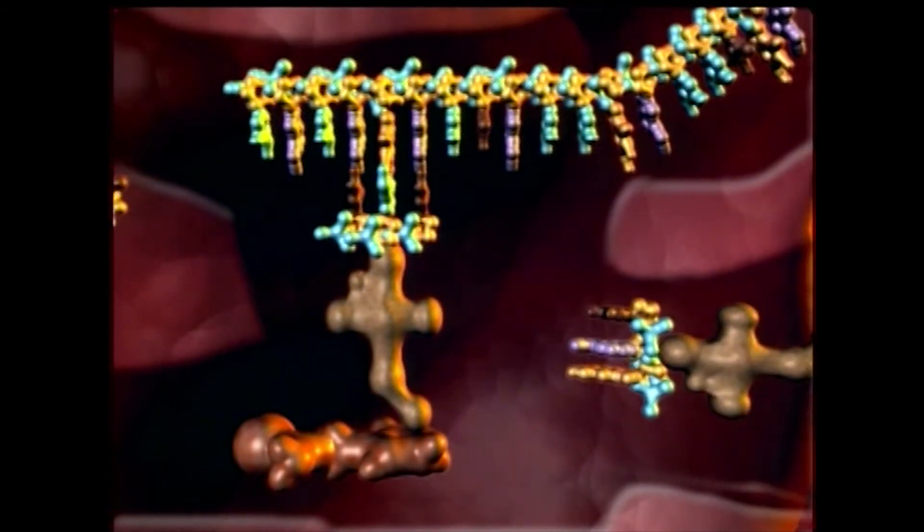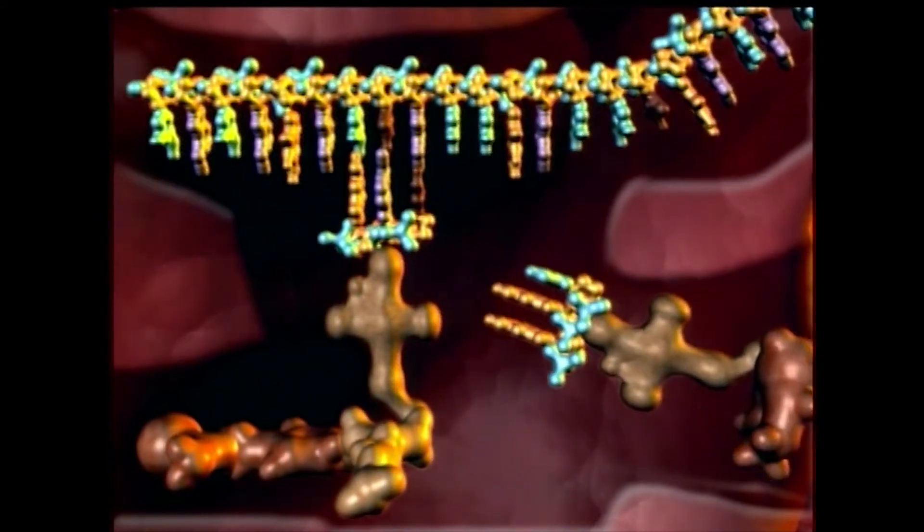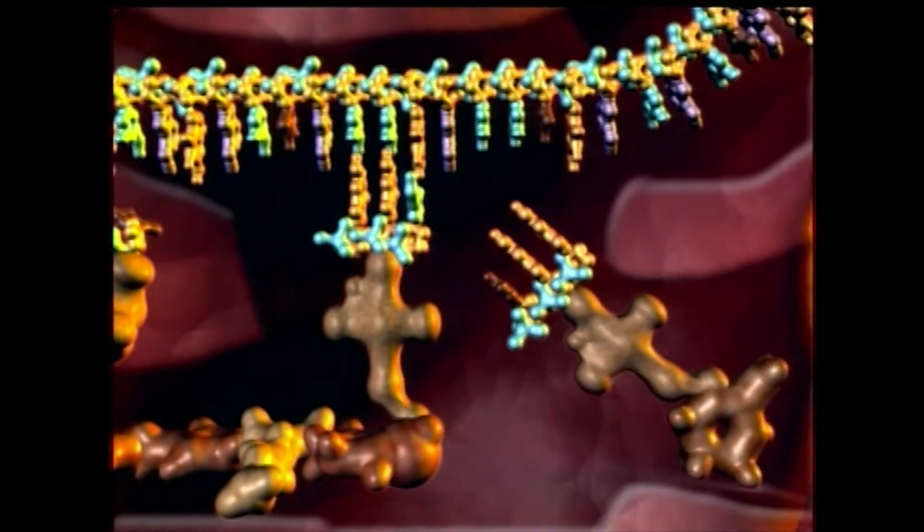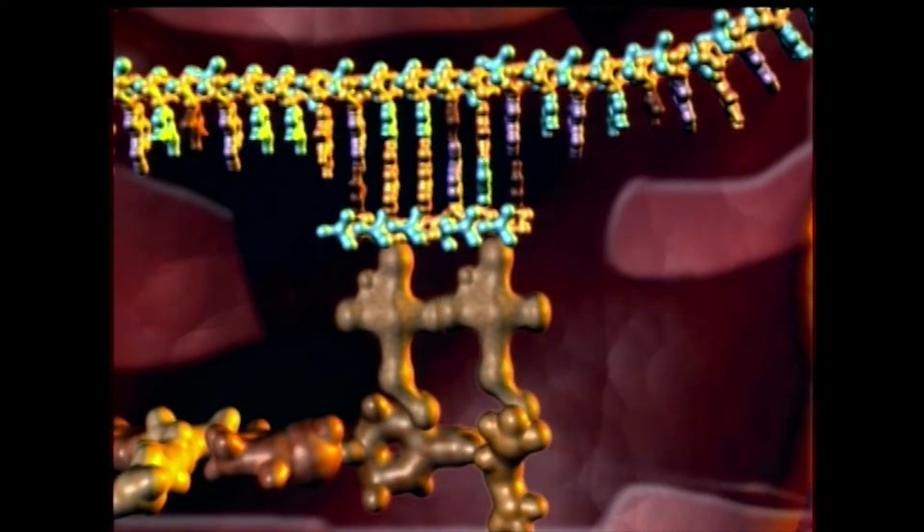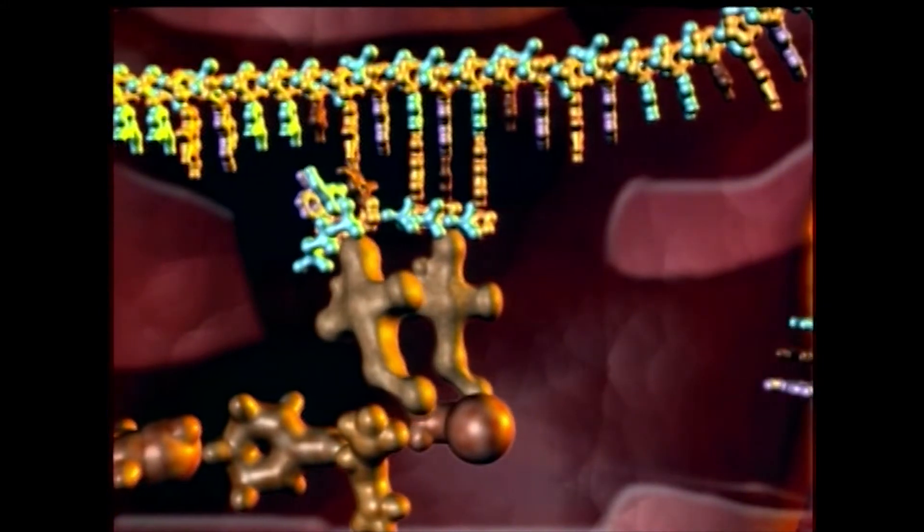Inside the ribosome, a molecular assembly line builds a specifically sequenced chain of amino acids. These amino acids are transported from other parts of the cell and then linked into chains, often hundreds of units long. Their sequential arrangement determines the type of protein manufactured.